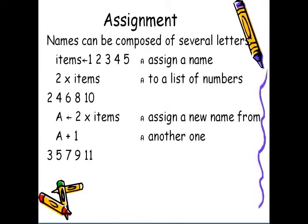Names can be made out of several letters. For example, here the numbers 1, 2, 3, 4, 5 are assigned the name items. The name items can then be used in further calculations. And we can see that the result of a calculation with items can itself be given a name. For example, below we can see that 2 times items is given the name capital A, which itself can be used in other calculations.